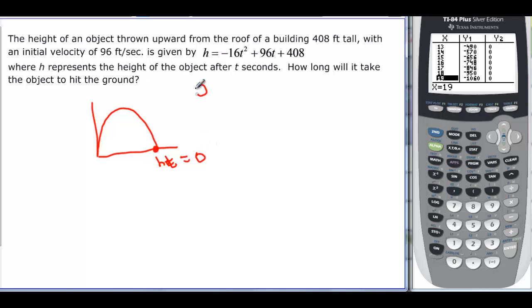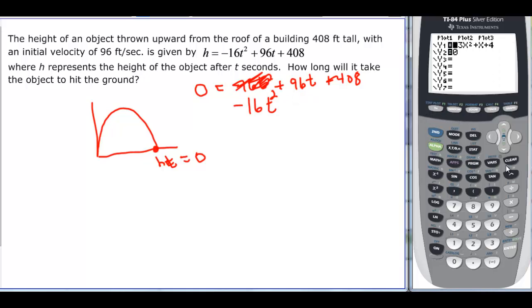So we really want to know when this is 0 equals negative 16t squared, sorry about the bleed here, plus 96t plus 408. So let's try putting that in our calculator. We have lots of ways that we know how to solve it from previous videos.